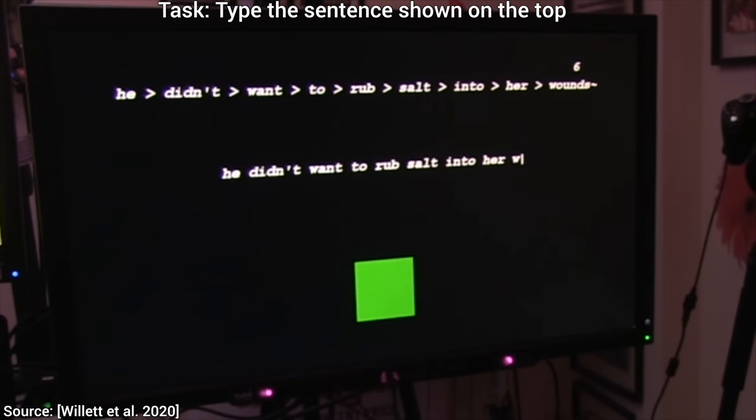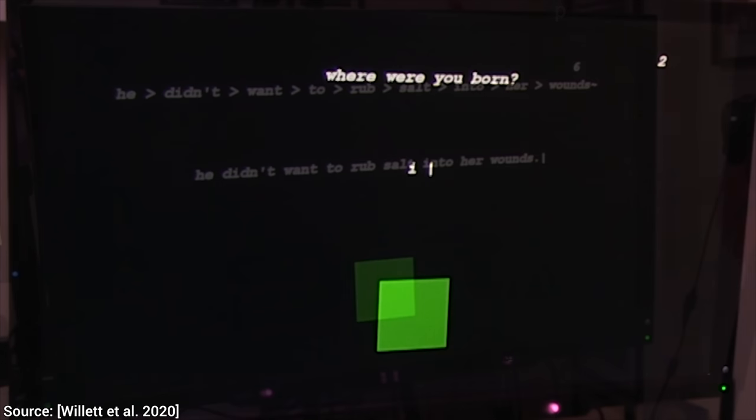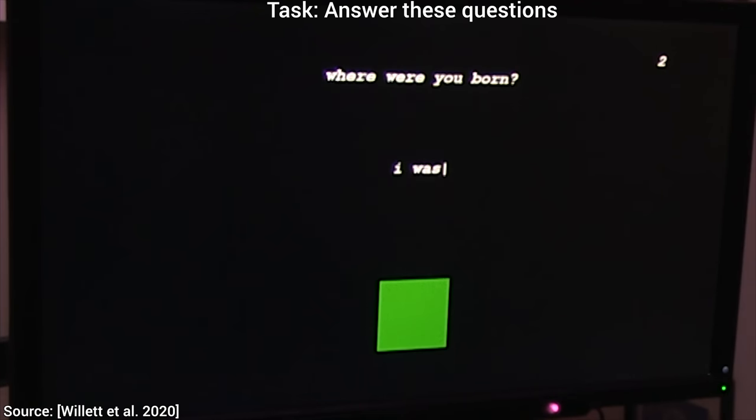90 characters per minute means that the test subject here, who has a paralyzed hand, can almost think about writing these letters continuously, and most of them are decoded and put on the screen in less than a second. Also, wait a second, 90 characters per minute, that is about 80% as fast as the average typing speed on a smartphone screen for an able-bodied person of this age group. Whoa!